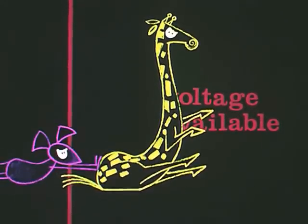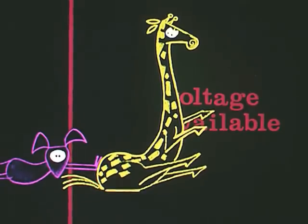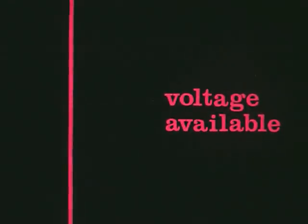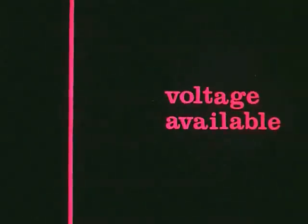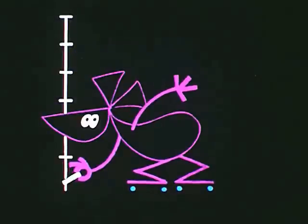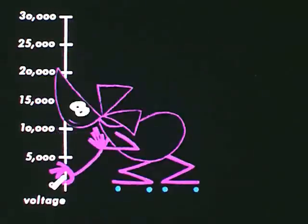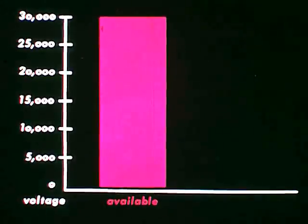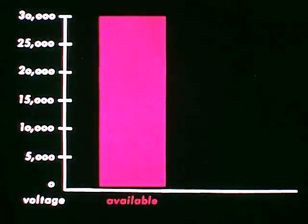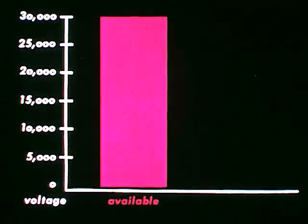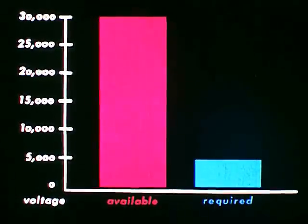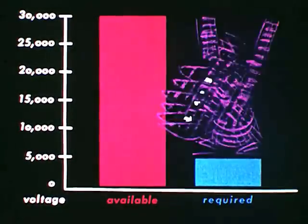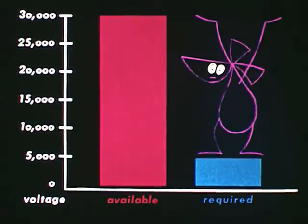The spark plugs use this voltage, and their condition determines the voltage required. To relate these two basic functions, we need a graph. Get him out of here! I said graph. This scale represents voltage from zero to 30,000 volts. A typical 12-volt ignition system that's new or in excellent condition will make up to 30,000 volts available to the spark plugs, while brand-new plugs require about 5,000 volts to produce a spark that will jump the gap.